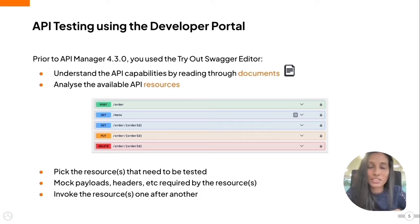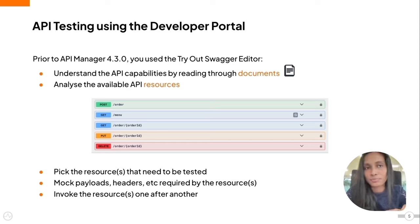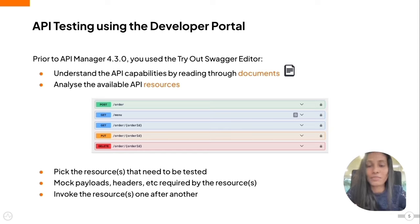You had to invoke those resources sequentially. Say you wanted to order something from the Pizza Shack API — an API responsible for ordering pizzas from a pizzeria. So you have to get the menu, you have to put in an order, and then track its status — those three actions. That involves three resources based on this API definition, so that was three sequential actions.